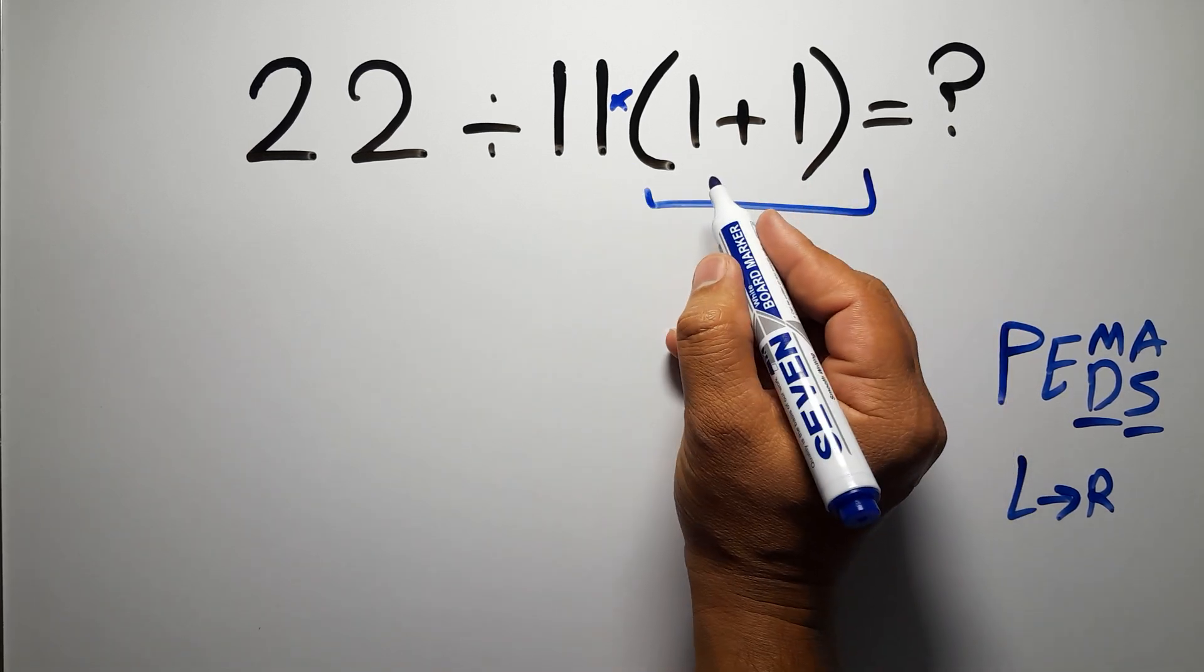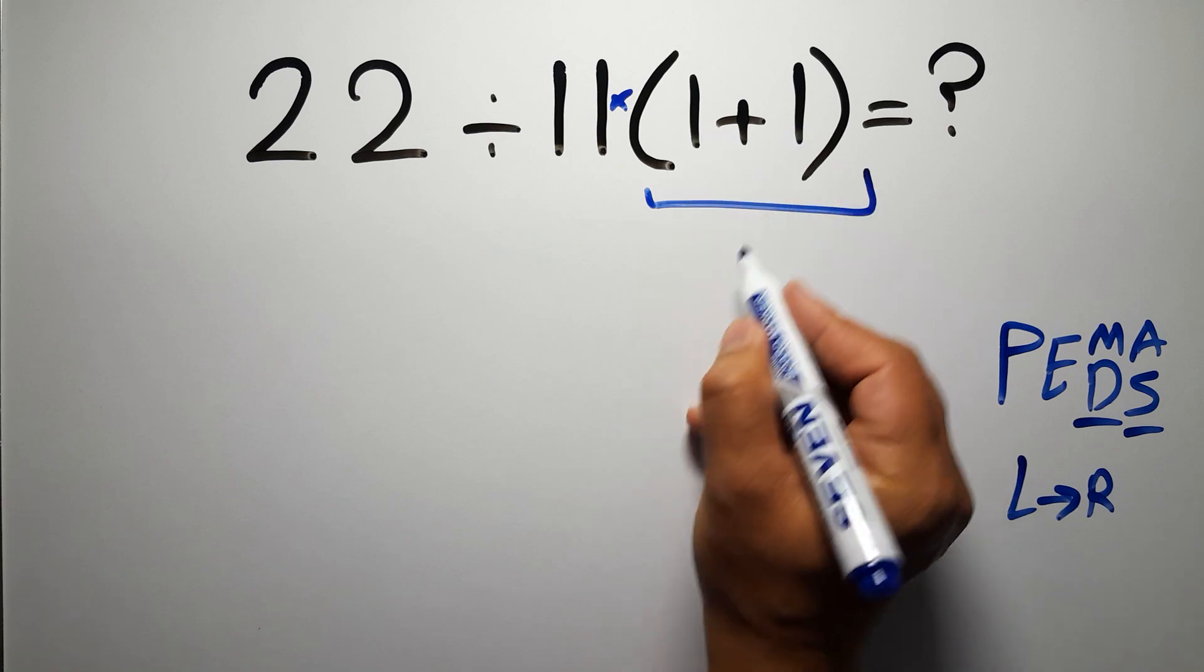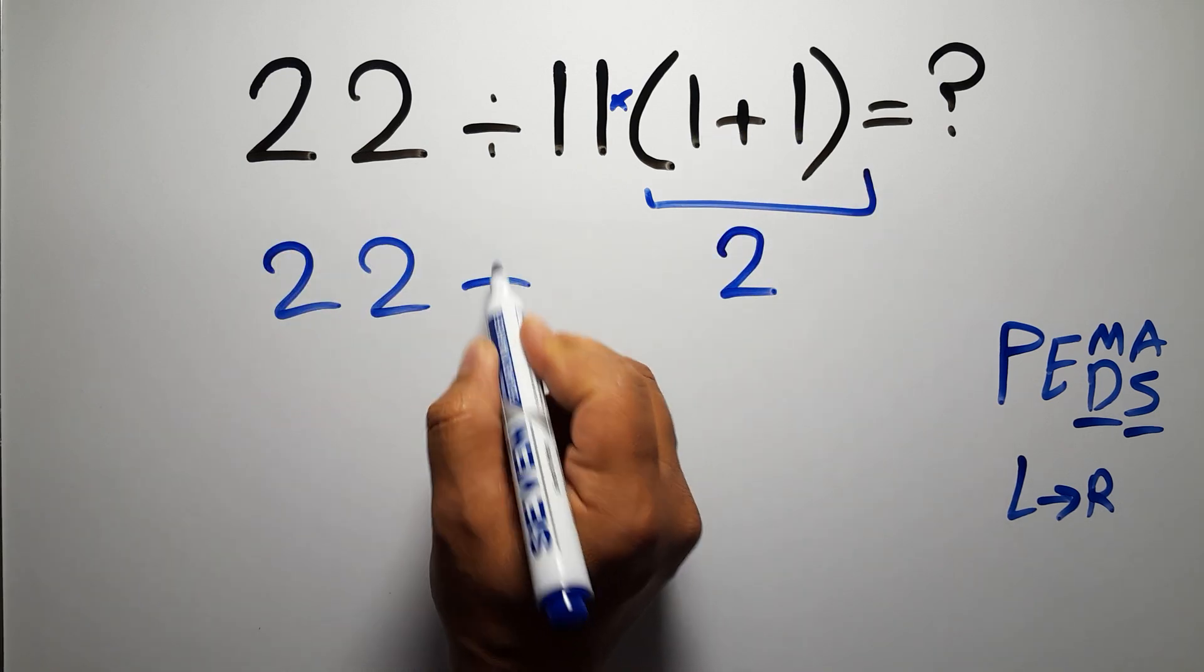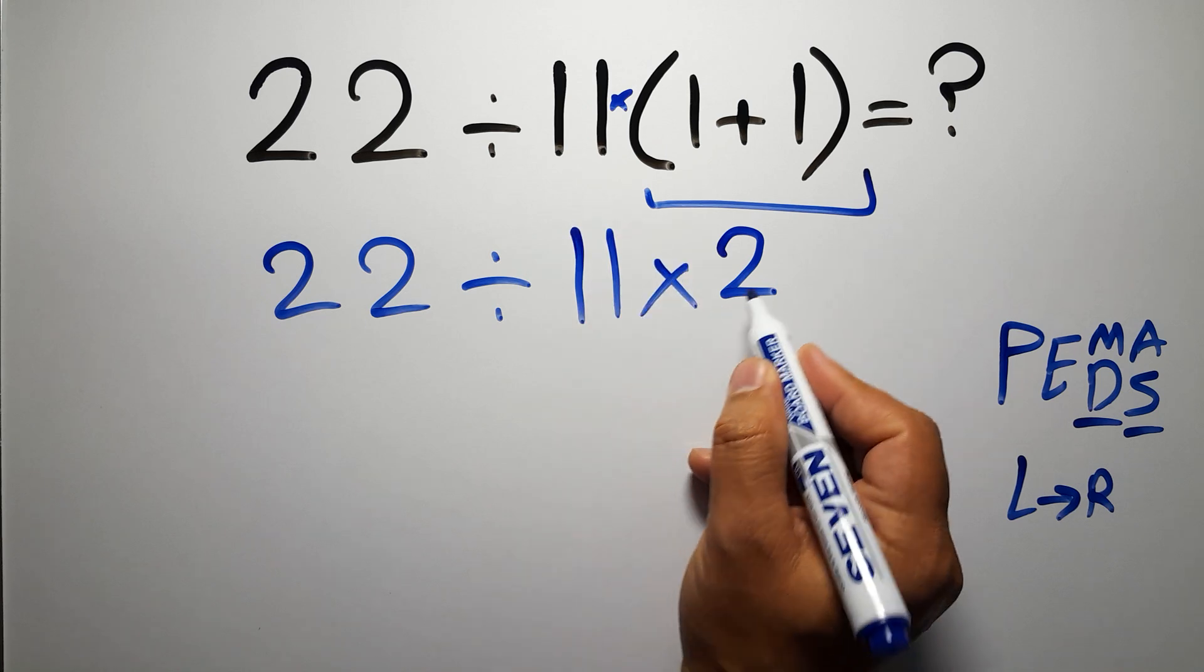So first this parentheses, inside this parentheses, we have 1 plus 1, which gives us 2, so 22 divided by 11 times 2.